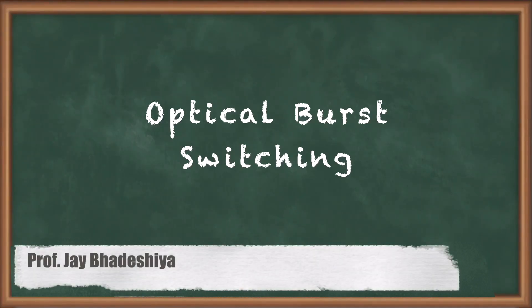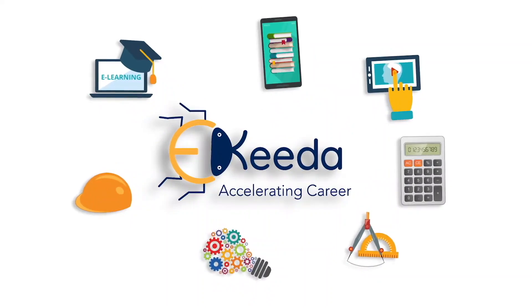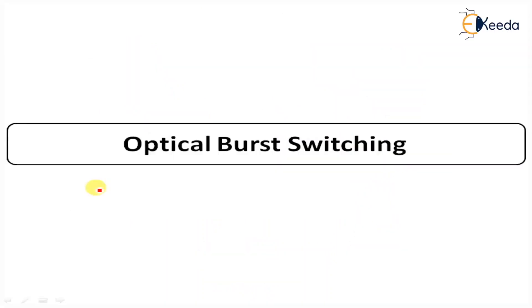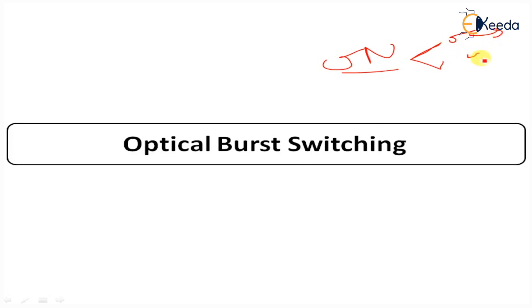Hello students, here we are going to learn about OBS — optical burst switching. OBS is an optical network technology that aims to improve the utilization of optical network resources compared with the previous two technologies: OCS (optical circuit switching) and OPS (optical packet switching).